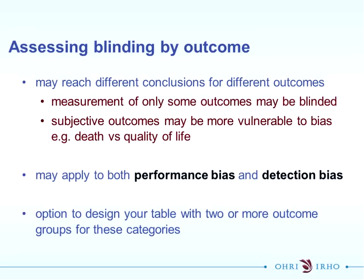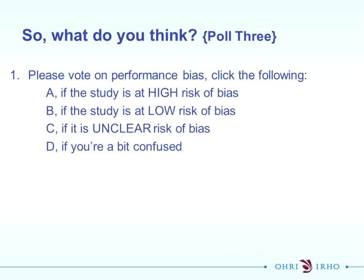It's very important to consider subjective and objective outcomes for both blinding domains. If there wasn't any blinding or it was incomplete or broken, but you have an objective outcome like mortality, it's very unlikely this will result in a systematic deviation from the truth with regards to bias. High risk of bias means there's no blinding, or the blinding is incomplete or broken, and it's a subjective outcome likely to be influenced. For both performance and detection bias, it's important that you assess by outcome - either individual outcomes or a class of outcomes treated similarly.